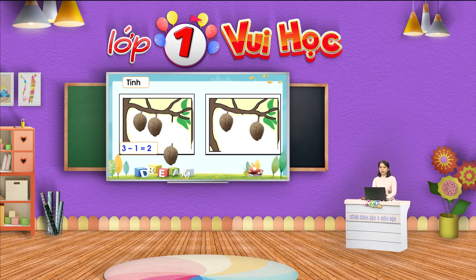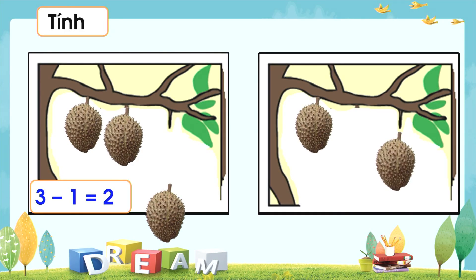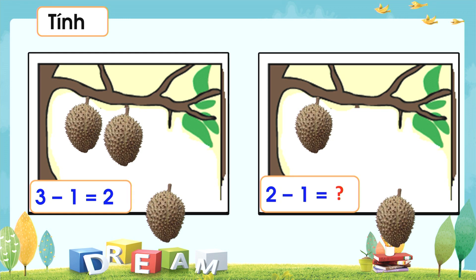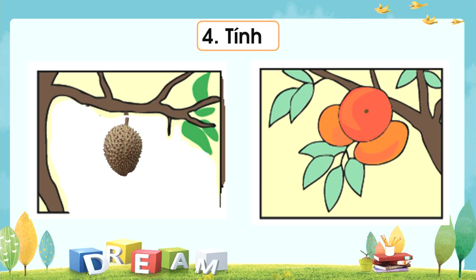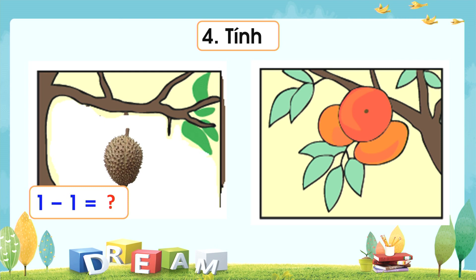Cô mời các em quan sát và thực hiện tiếp ở bức tranh tiếp theo. Trên cành cây có một quả, rơi xuống một quả, còn lại một quả, cô có phép tính 2 trừ một bằng một. Cô mời các em quan sát bức tranh thứ ba. Trên cành cây có một quả, rơi xuống một quả. Trên cành cây không còn quả nào hết, cô có phép tính 1 trừ một bằng 0.